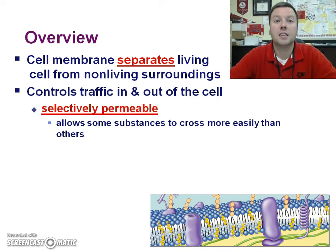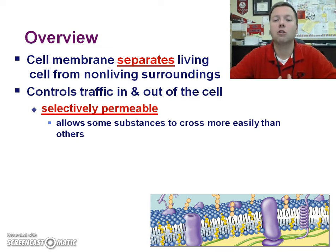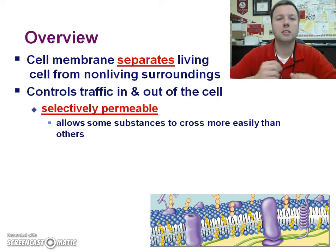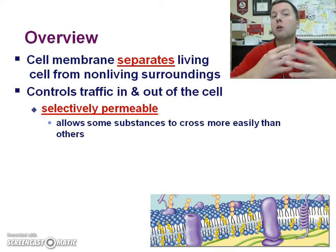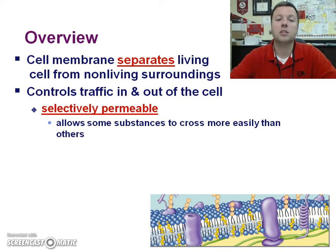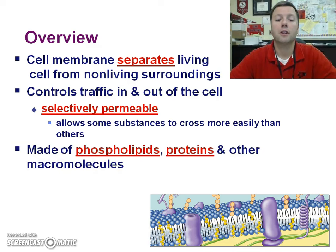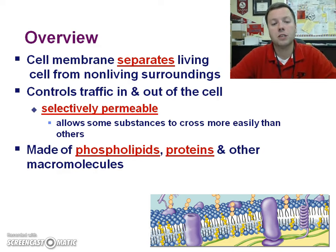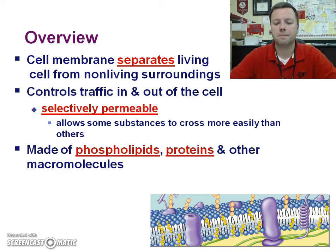Because of this, we say it's selectively permeable — it allows some substances to cross the membrane more easily than others. Selective means picky or choosy, and permeable means it has holes, like something that permeates. It's made of phospholipids, proteins, and other macromolecules such as cholesterol.